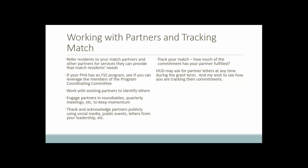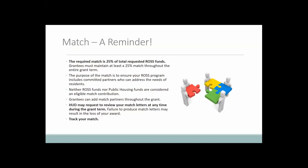Briefly touching on working with partners and tracking your match: at the start of your grant application, you were able to secure a 25% match. It's very important for you to go back to those partners now that you've received your Ross grant, to remind them of their commitments to you, as well as to think about a plan of action to leverage the resources your partners pledged and how you can ultimately think about a strategy to support community residents.